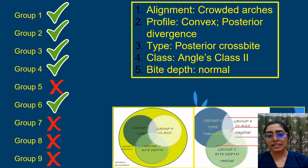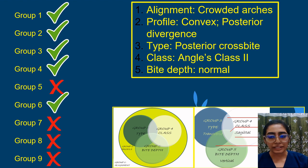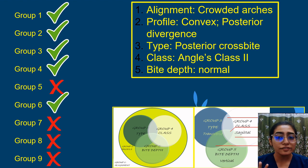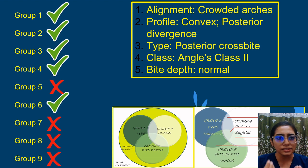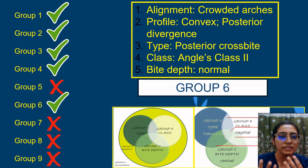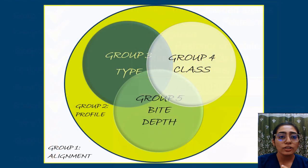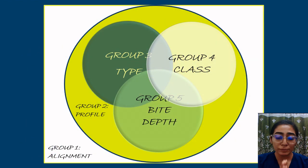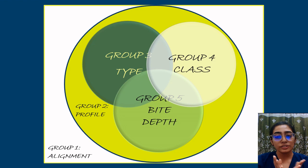This classification overcame the major weaknesses of the Angle system by including arch length discrepancy, the profile, and any deviation in all three planes of space. I hope you have understood this classification, and that's all.